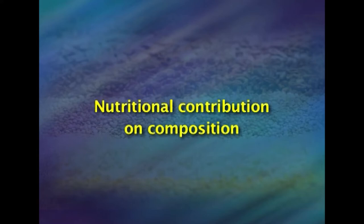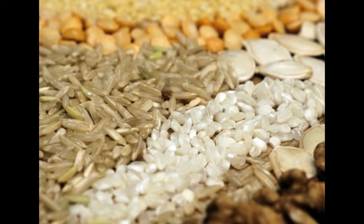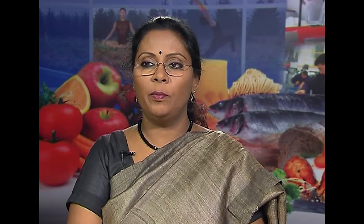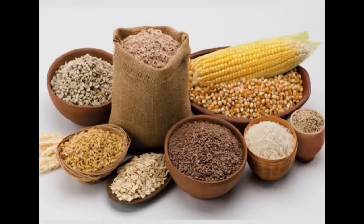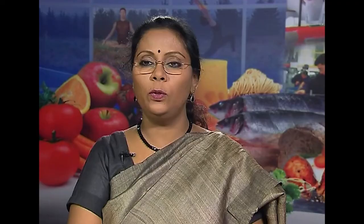Let us have a look at the nutritional composition. Cereals are the main source of energy and contribute about 70 to 80 percent of the total energy requirement. On average, 100 grams of cereals give about 340 kilocalories. Energy is contributed chiefly by carbohydrates — approximately 80 percent of the dry matter of cereals is carbohydrates.